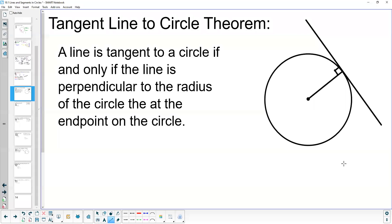Hi, this is Mrs. Kidman. In this video, we're going to discuss the tangent line to circle theorem. A line is tangent to a circle if and only if the line is perpendicular to the radius of the circle at the endpoint on the circle.